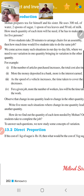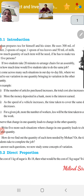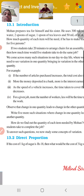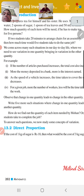If two students take 20 minutes to do the same job, then how much time could five students take? If one quantity is more, then the other is also more — that's direct proportion. If one quantity is more and the other is less, then it's inverse proportion.